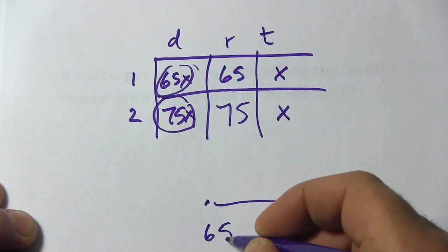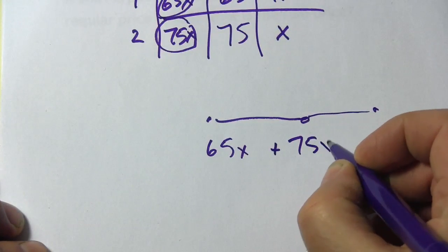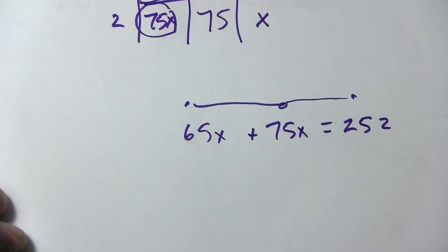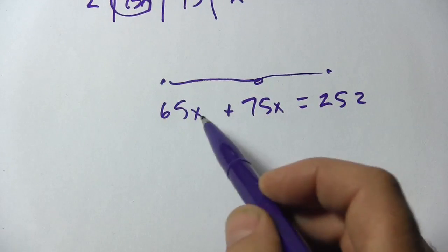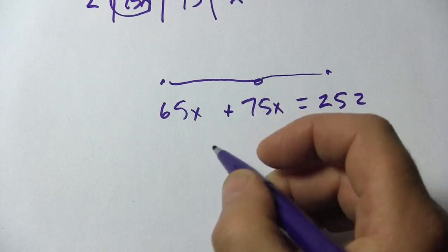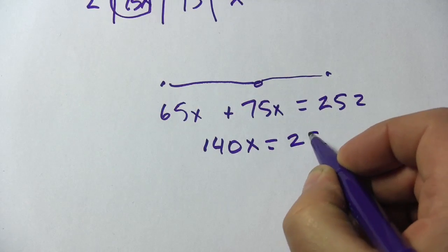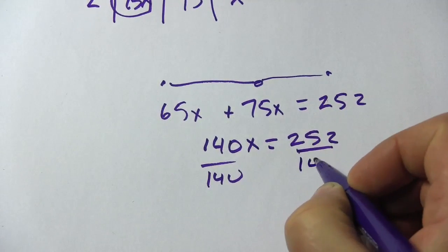I can simply write 65x plus 75x equals 252. What I've got now is an equation with one variable I can solve for x. So we'll add 65 and 75 together, we get 140x equals 252. And then we'll divide 252 by 140.